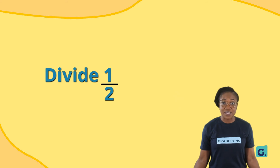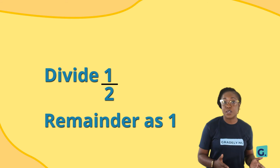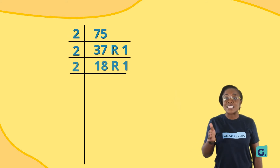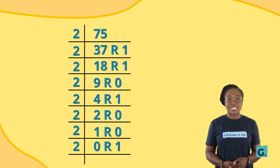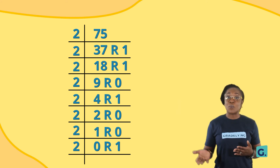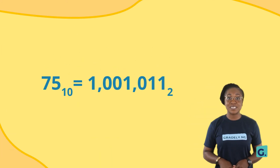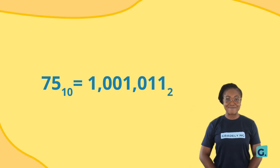We want 0 to be the last digit, so we divide 1 by 2. The mathematical practice is to push the remainder as 1 when this happens. Make sure you arrange your division process as the diagram on this frame, so it will be easy to visualize your answers. When presenting your answer, start with the downward remainder to the upward remainder. So, 75 base 10 equals 1,001,011 base 2.